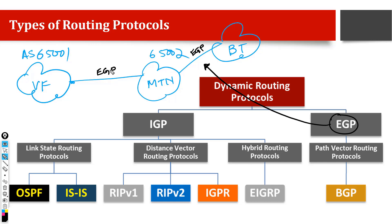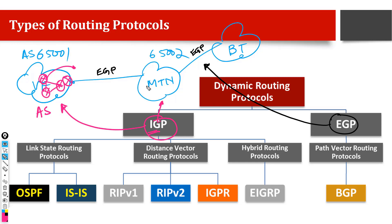Whenever we connect different networks together we need an Exterior Gateway Protocol between them. But when running protocols within a network — when we need to connect different routers and networking devices together within it — we use IGP, Interior Gateway Protocol. The IGP will end at the border router; it will not go beyond the autonomous system. It can only help to do routing within the AS. Examples of IGP include OSPF, IS-IS, and EIGRP.